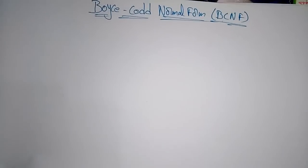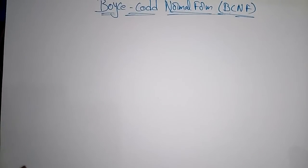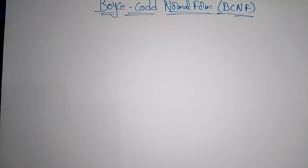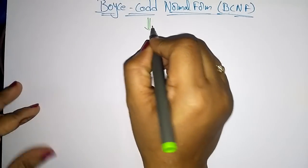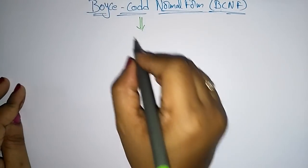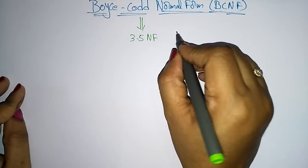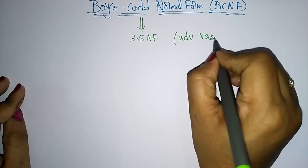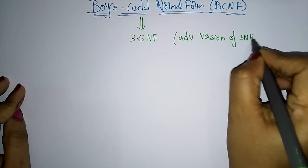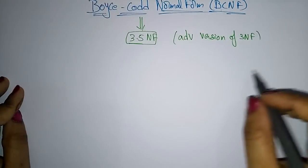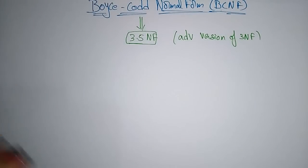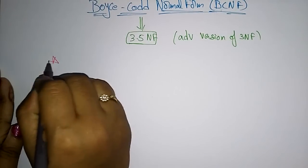Welcome to the next topic: BCNF, Boyce-Codd Normal Form. In the previous video I explained about 3NF, so now let us see what BCNF is. BCNF is also referred to as 3.5NF because it is an advanced version of 3NF. So the another name for BCNF is 3.5 Normal Form.